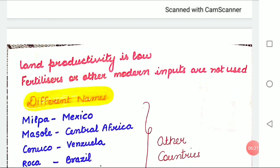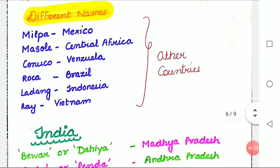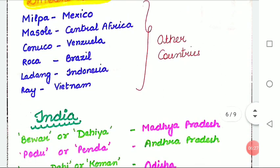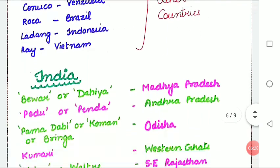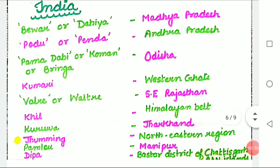This type of farming is also known by different names in different countries. When we talk about India, we don't have a single unified name for slash and burn cultivation — it is known by different names in different parts of the country.